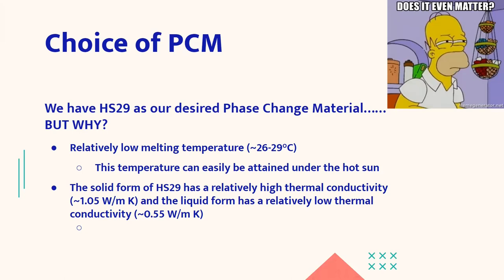There are two reasons for that. Firstly, it has relatively low melting point, low melting point that is from 26 to 29 degrees Celsius. So this temperature can be easily attained under the hot sun. Secondly, the solid form of HS29 has a relatively high thermal conductivity and the liquid form has a relatively low thermal conductivity.